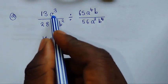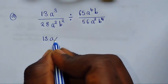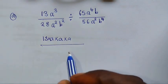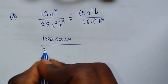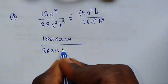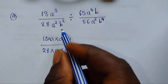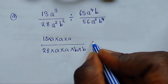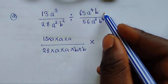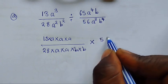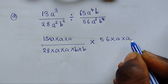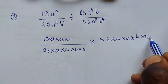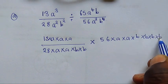We write 13a³ — meaning 13 × a × a × a — over 28 × a² (which is a × a) × b² (which is b × b). Then we change the division to multiplication. So 56a²b⁴ goes on top, expanded as 56 × a × a × b × b × b × b.